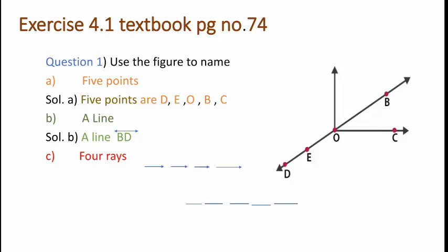Next, you have to name four rays. What is a ray? A ray is a portion of a line. So the four rays are: ray OD, ray OE, ray OC, and ray OB.